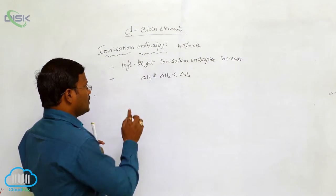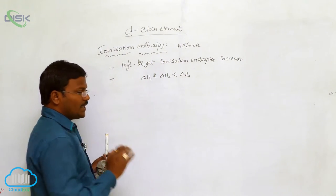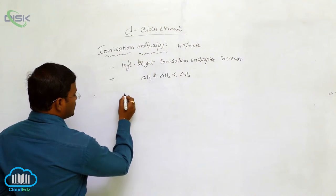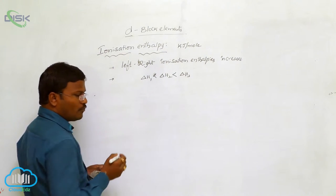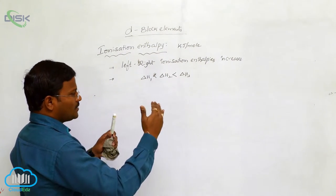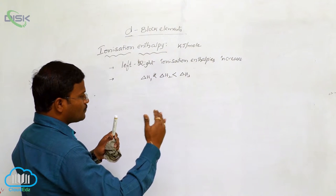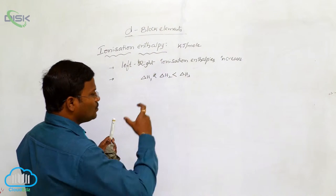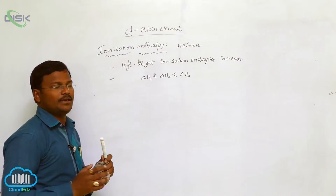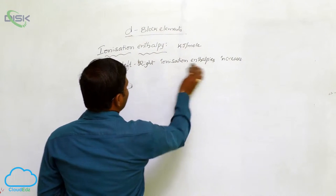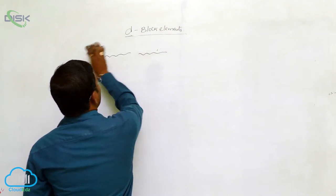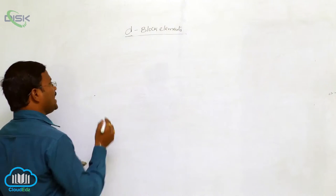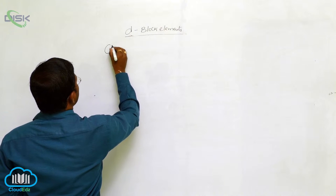In such cases the ionization enthalpy values may increase. A graphical representation of ionization enthalpies helps us explain the slight variation from one d-block element to another. The next and most important trend to explain the chemical behavior of any element is oxidation states.